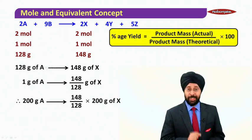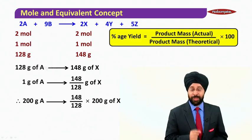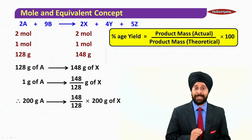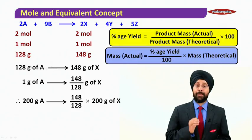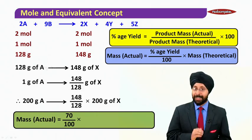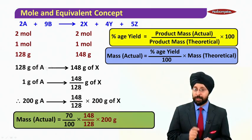Now since percentage yield equals product mass actual divided by product mass theoretical times 100, let us rearrange this equation because we need mass actual. So we can write it as mass actual equals percentage yield by 100 times mass theoretical. Now putting in the value, yield is 70%, so 70 by 100 times this mass.